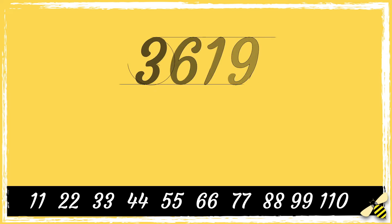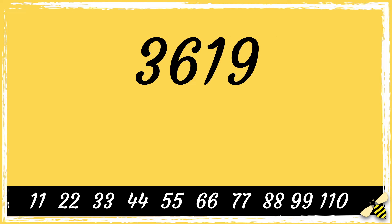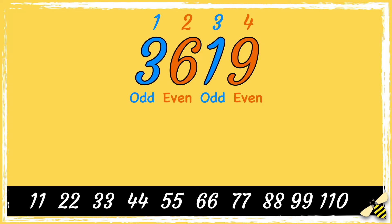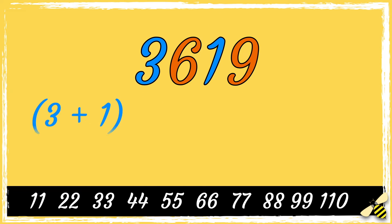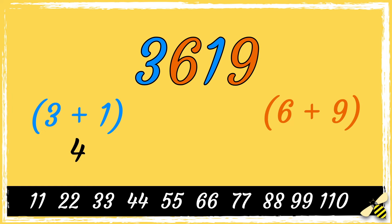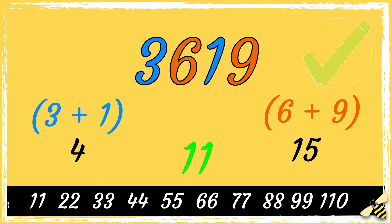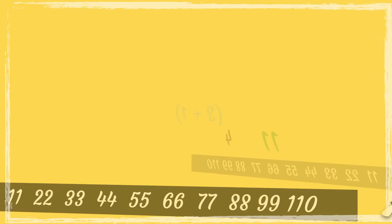Here's another example: 3619. We have the odd digits and the even digits. Let's add the odd digits: 3 add 1 equals 4. Then add the even digits: 6 add 9 equals 15. The difference between 15 and 4 is 11. 11 is divisible by 11, so 3619 is divisible by 11.